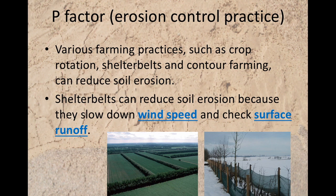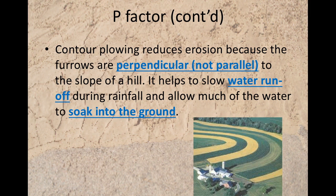Erosion control practice, or P factor. Various farming practices such as crop rotation, shelter belts, and contour farming can reduce soil erosion. Shelter belts can reduce soil erosion because they slow down wind speed and check surface runoff. Contour plowing reduces erosion because the furrows are perpendicular, not parallel, to the slope of the hill. It helps slow water runoff during rainfall and allows much of the water to soak into the ground.